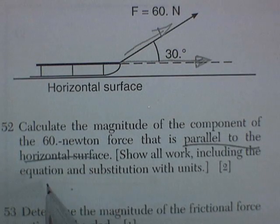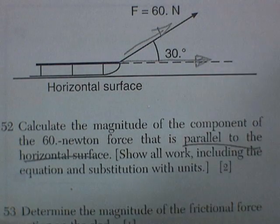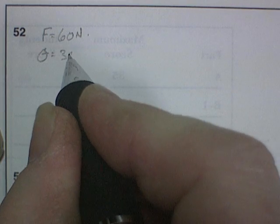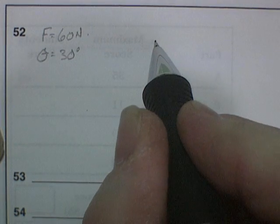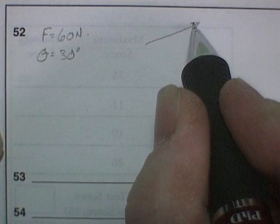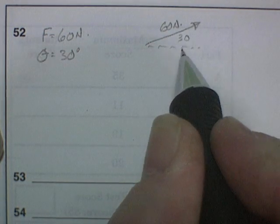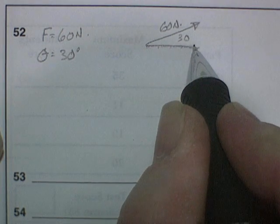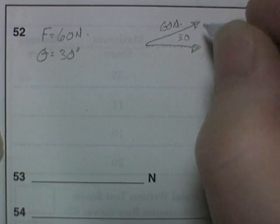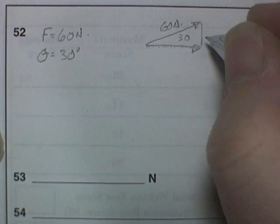Show work including the equation and substitution with units. On the answer sheet, first list the knowns. Force is 60 newtons, angle is 30 degrees. I'll do a little sketch here: 60 newtons at 30 degrees, and I'm interested in this component of the right triangle.